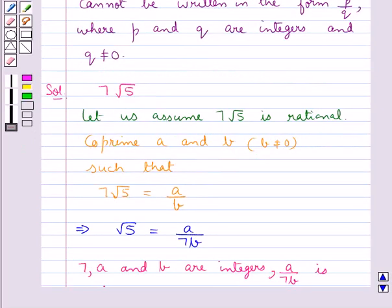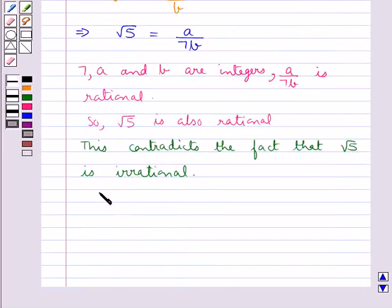Hence our assumption that 7 root 5 is rational is not correct. Hence we get 7 root 5 is irrational. Hence proved.